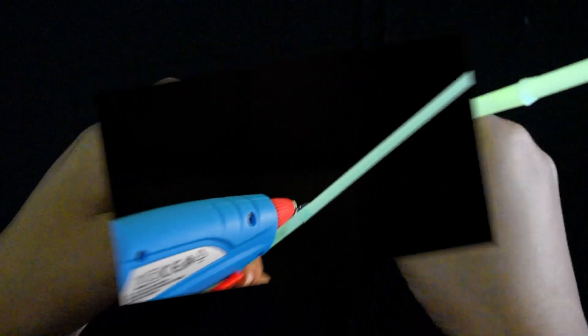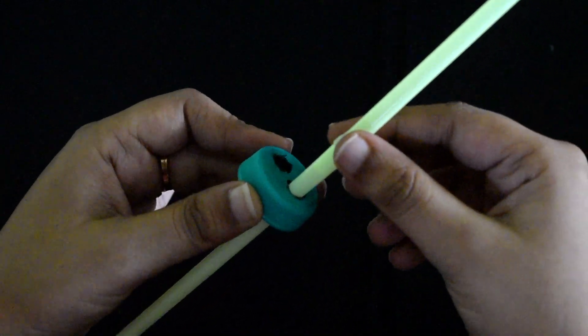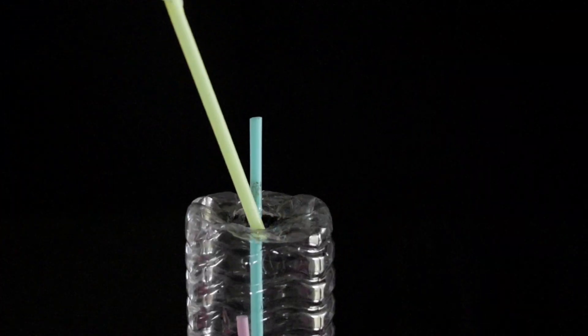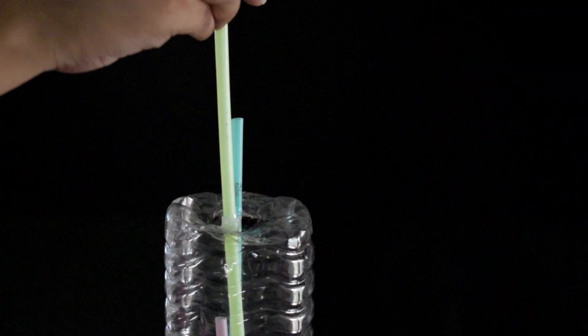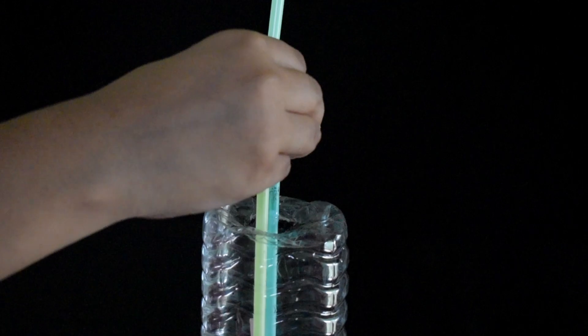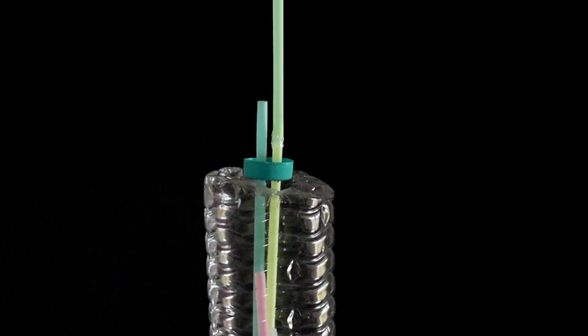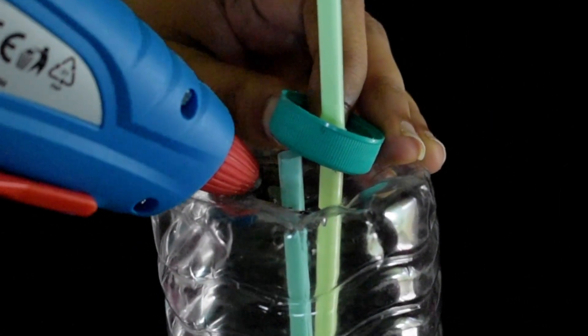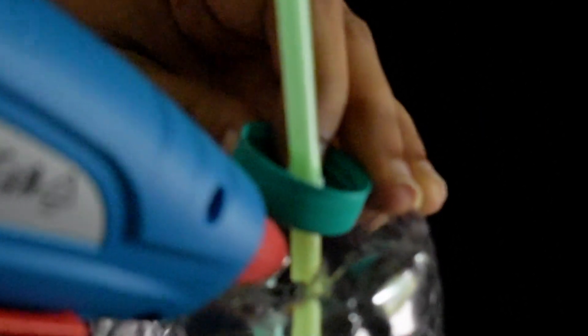Glue two more straws. Thread the straw through one of the holes in the third bottle top. Put a hole in the base of the second bottle and slide down the third cap with straw like this. Apply glue all around the hole and stick the lid on.